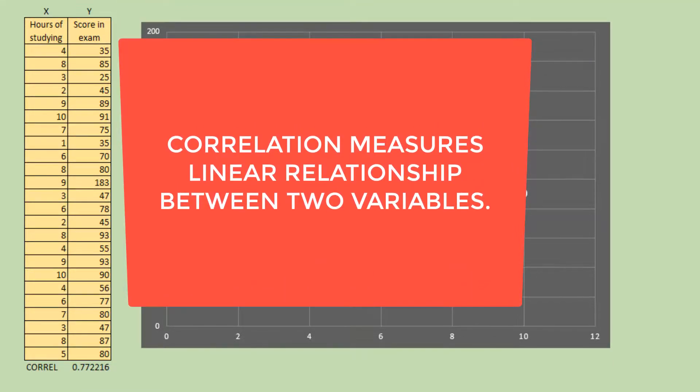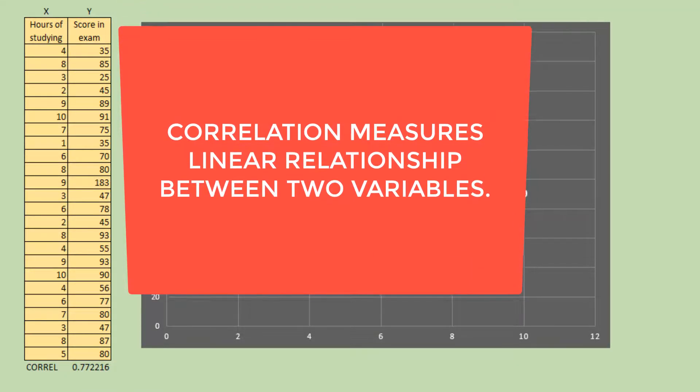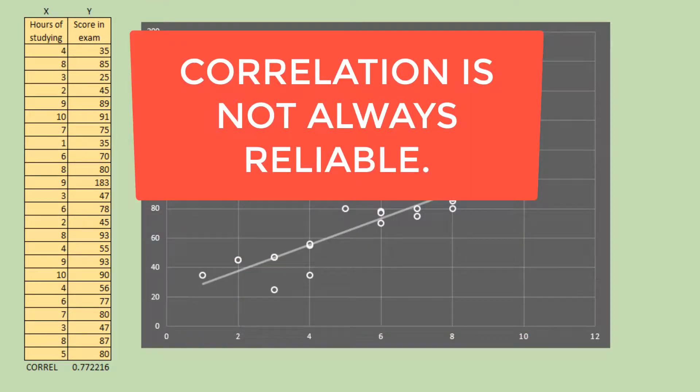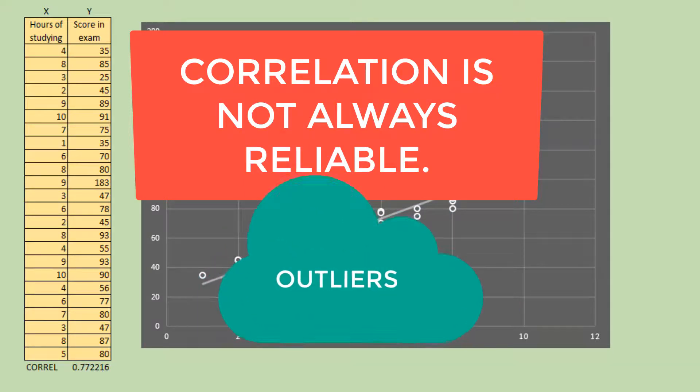While correlation measures the linear relationship between two variables, sometimes it may not be reliable. It may be unreliable when outliers are present in one or both of the two data series.